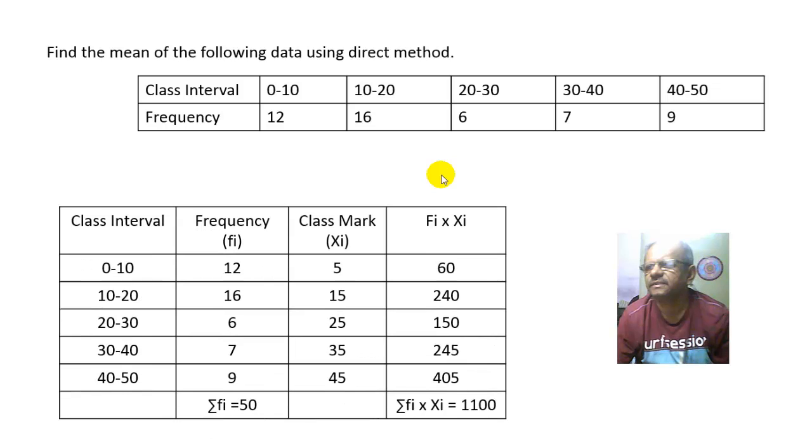So friends, first we will find the class mark and then the product of frequency and this class mark. The class mark of the class interval 0 to 10 is calculated as 10 plus 0 that is 10 divided by 2, and therefore 2 1s are 2, 2 5s are 10. So the class mark will be 5.